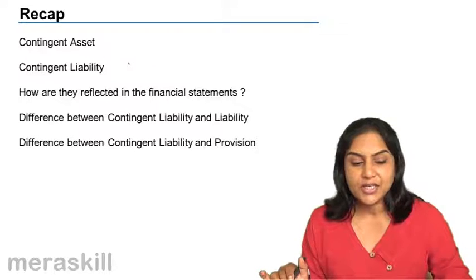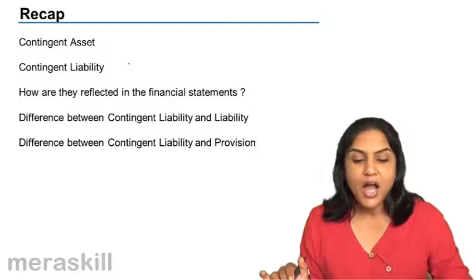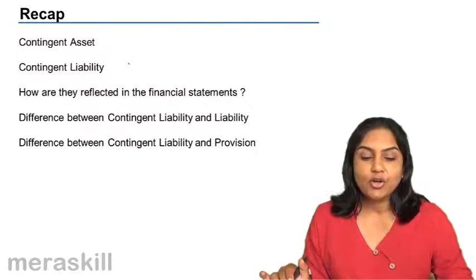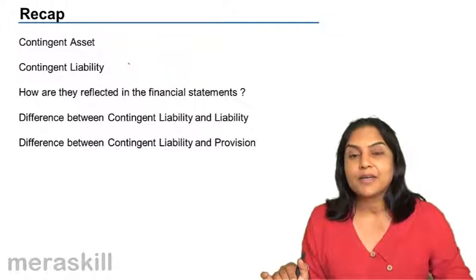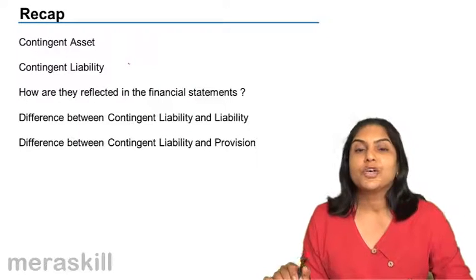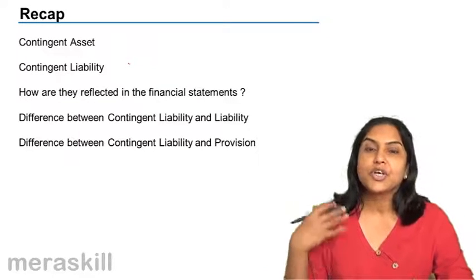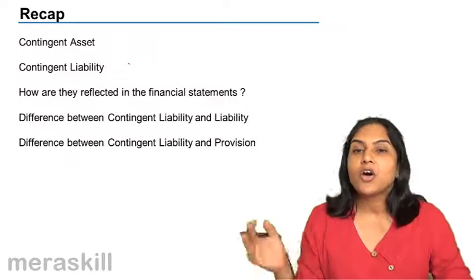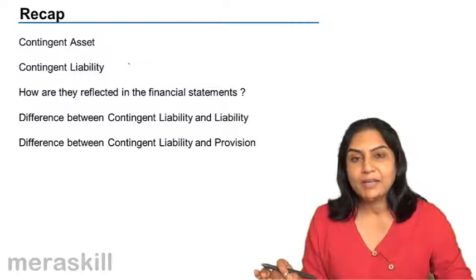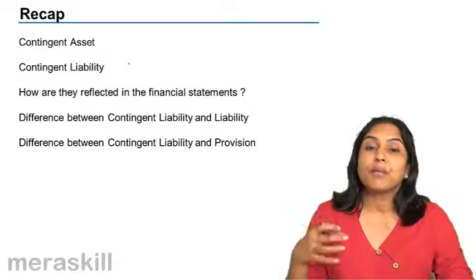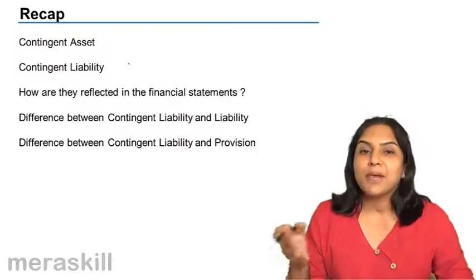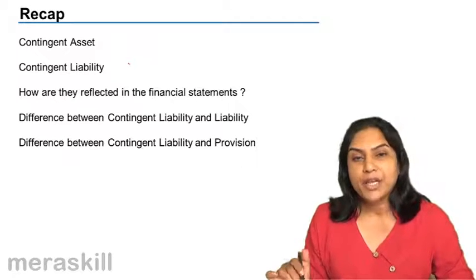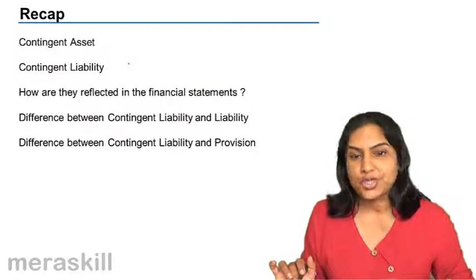So we defined a contingent asset, a contingent liability, how they are reflected in the financial statements, and also went on to understand the distinction between a contingent liability and a liability. A liability is a present obligation, for the settlement of which we would have to give some money or money's worth. But a contingent liability is only a probable obligation — it is very unlikely to arise and may or may not arise on the happening or non-happening of some future event.